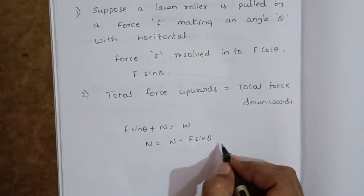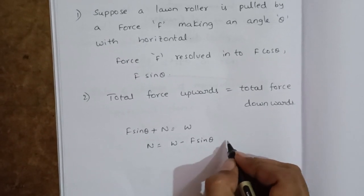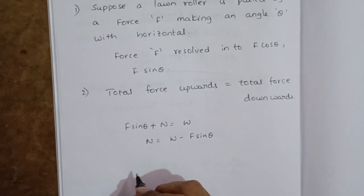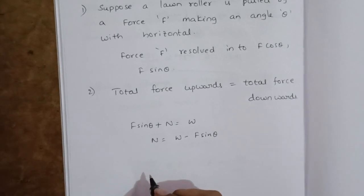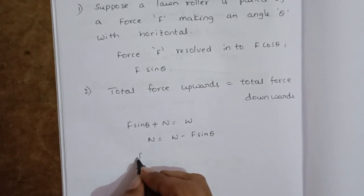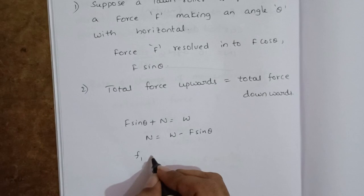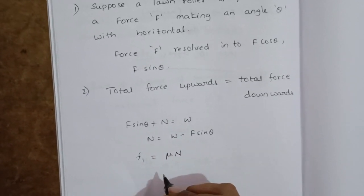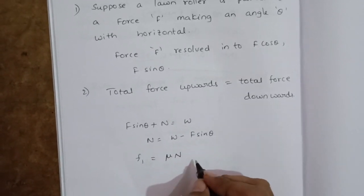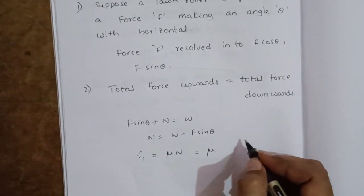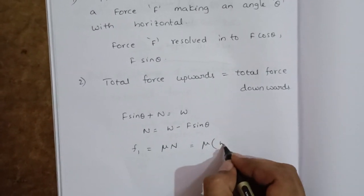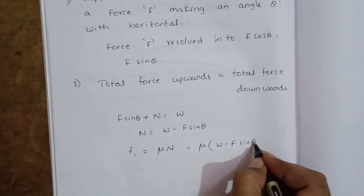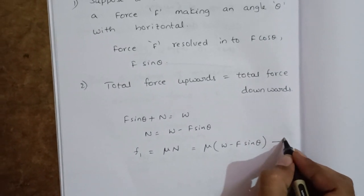The frictional force in the pulling case, F1, equals the coefficient of friction mu times N. Substituting, F1 = μ(W − F sin theta). This is equation 1.